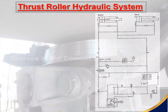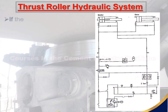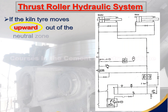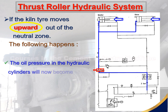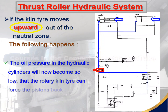Thrust roller hydraulic system: if the kiln tire moves upward out of the neutral zone, the following happens — the oil pressure in the hydraulic cylinders will become so low that the rotary kiln tire can force the pistons back and slide down into the neutral zone.